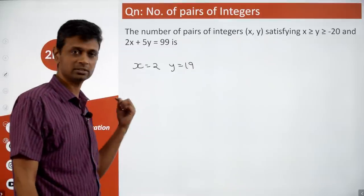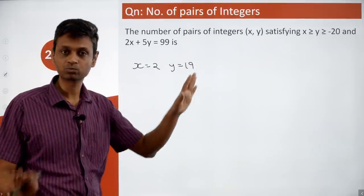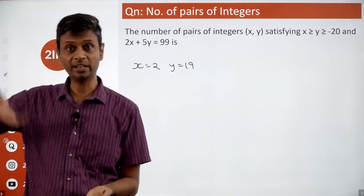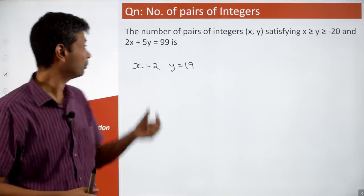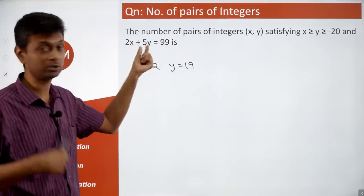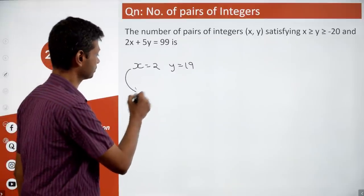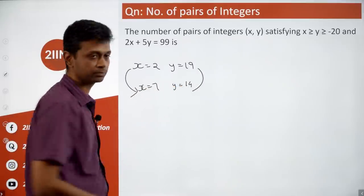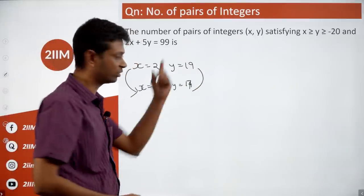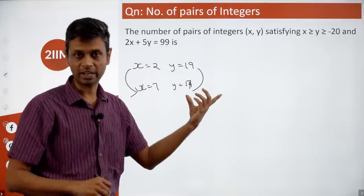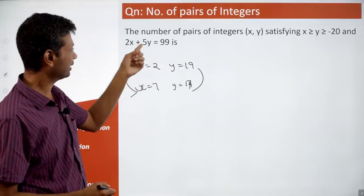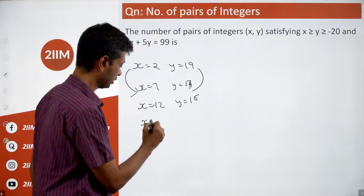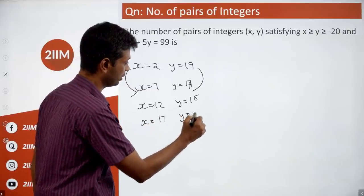From this solution, increasing x by 5 decreases y by 2 (keeping 2x+5y constant). So (7, 17), (12, 15), (17, 13) and so on. The condition x ≥ y first becomes satisfied at (17, 13).